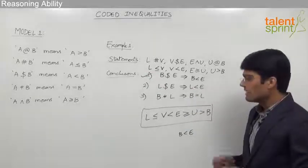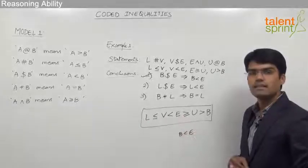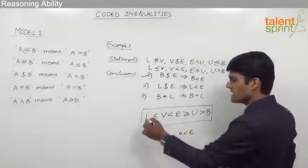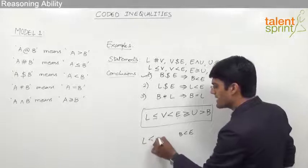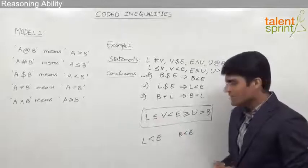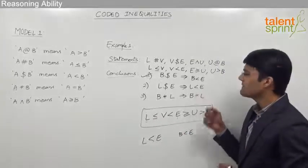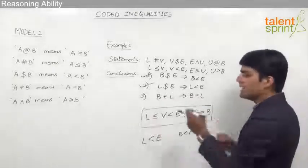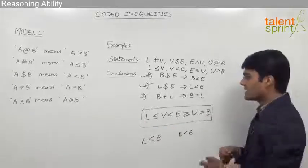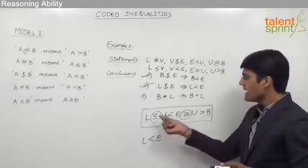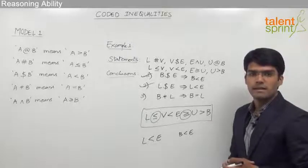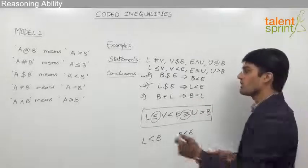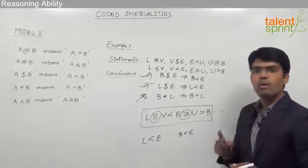The second conclusion is L < E. From the statement, L ≤ V and V < E. By the rule that similar inequalities yield the common part, the relationship between L and E is L < E. So conclusion two is also true. The third conclusion is B = L. Comparing B and L reveals dissimilar inequalities between them, so they cannot be compared — B can be less than, greater than, or equal to L. Since the conclusion states only B = L, conclusion three is false. The answer is conclusions one and two are true.